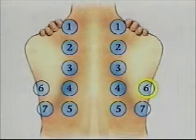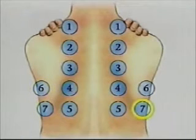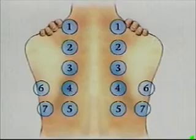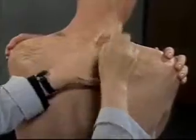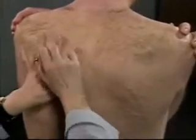Percuss down the chest wall from the apices to the bases of the lungs. Listen to the intensity, pitch, and duration of your percussion notes and decide what kind of notes you are hearing. Normal lungs are resonant. Locate any areas where you hear abnormalities.